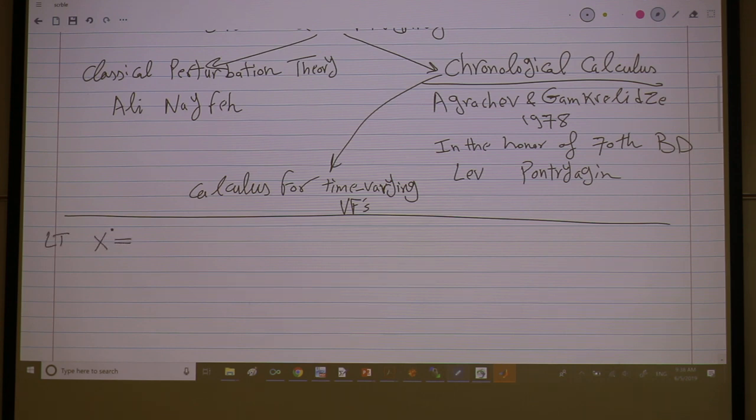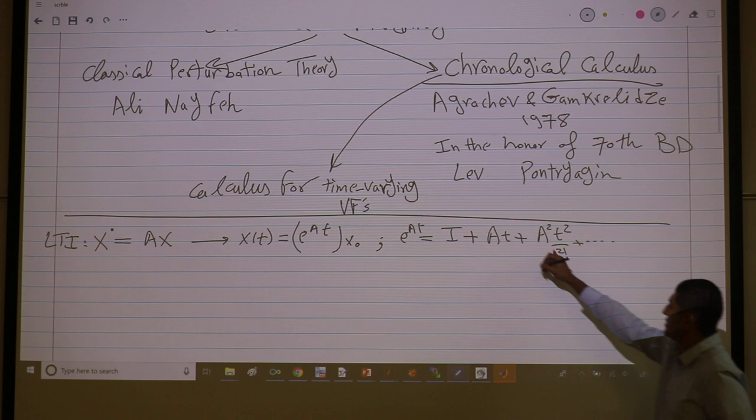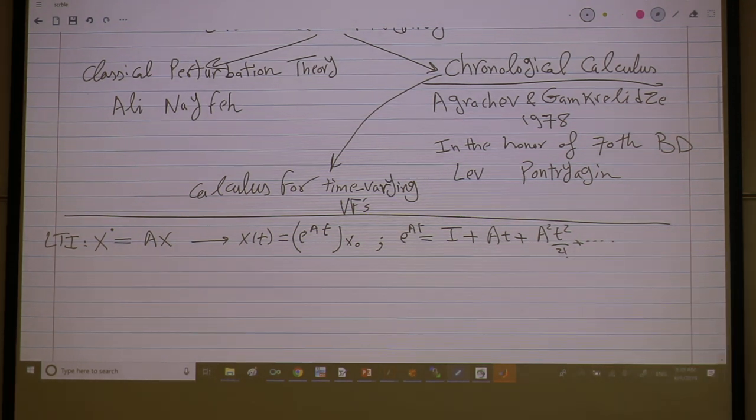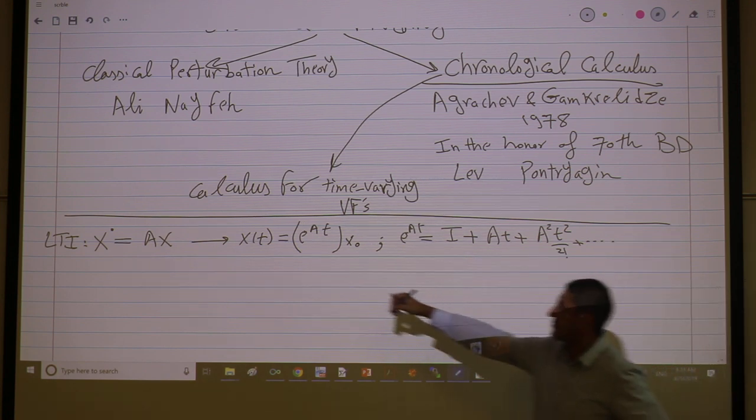So here is, let's have some exposition here. I have LTI, our paradise, x dot equals A of x. We know the solution. It's exponential acting linearly on x naught, right? Where e to the At is identity plus A times t plus A squared t squared over 2 and so on. First of all, I can do this with matrices. You can multiply, so it's well-defined. And you have to worry about convergence because it's an infinite series and luckily it always converges. And it converges to the solution of the differential equation.